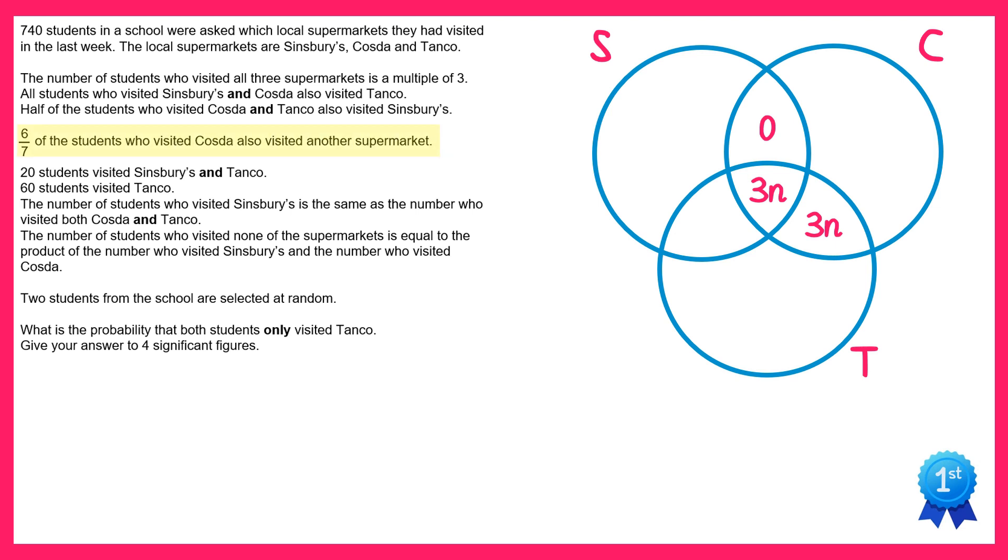Next we've got 6 sevenths of the students who visited Cozda also visited another supermarket. Now if we look at the Cozda circle and look at the ones that visited at least one other supermarket, that's these ones here. Altogether that's 6n. Then the whole circle must be equal to 7n. Since we've got 6n so far we just need one more n, so the final section in the Cozda circle must be n.